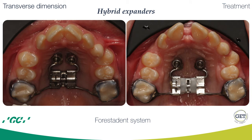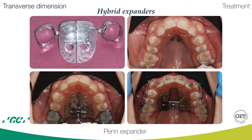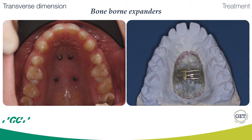Hybrid expanders are anchored with TADs to palatal bone and have a dental component that is rigid in the transverse dimension. Forces are transmitted to the bone as well as to the teeth. Pure bone-borne expanders are anchored only on TADs, and the expander force is delivered strictly to the bone, thereby avoiding dental side effects.